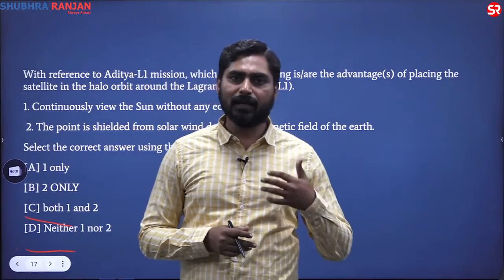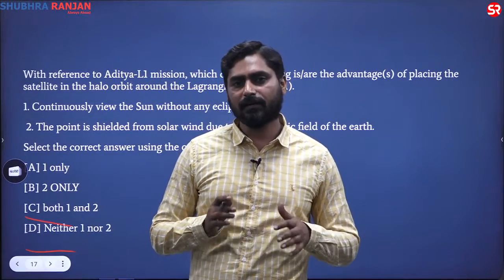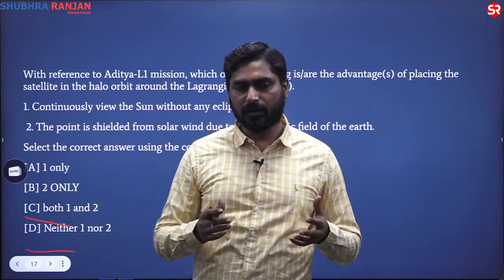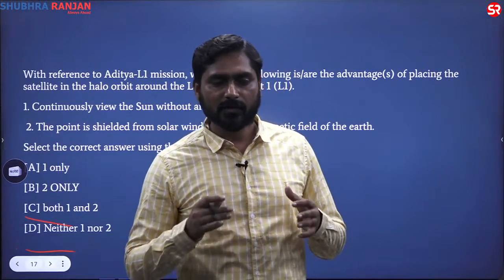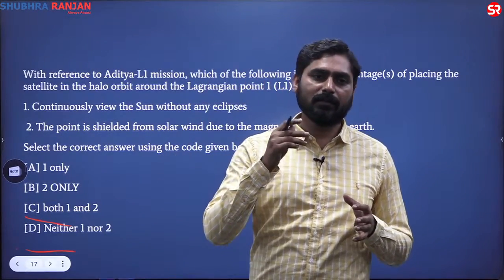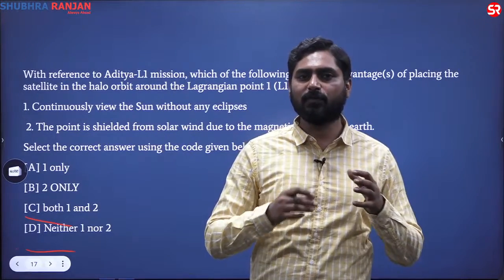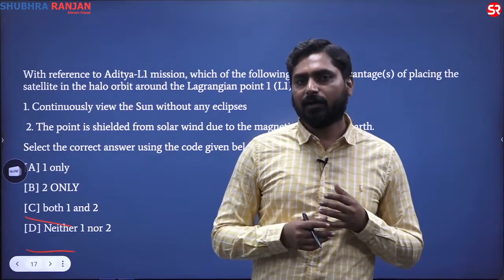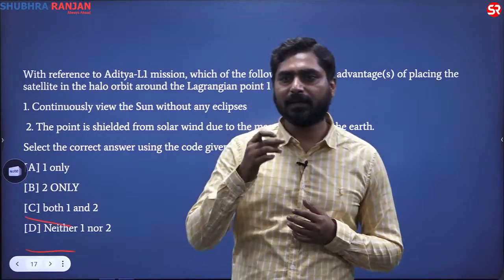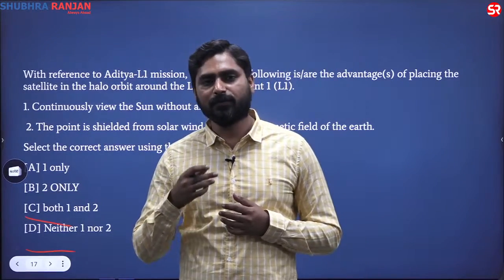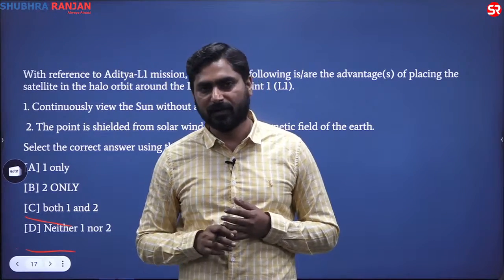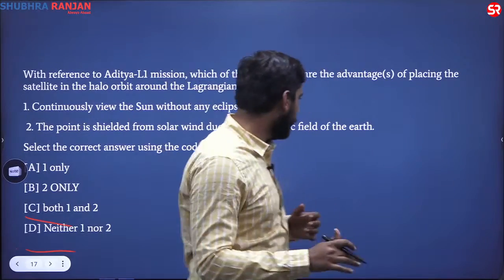What are these Lagrangian points? These are five points related to how the sun and earth revolve around each other. There are five points in space between the sun and earth where the gravitational forces generally cancel out each other, so if you place a satellite there, you would need less fuel to keep it in that position.